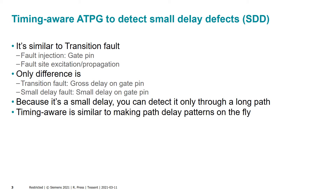Timing-aware is similar to transition fault — both have a fault site at each gate pin, slow to rise and slow to fall. The big difference is that transition fault considers a gross delay on the pin, so any path tested through that pin is valid to catch a gross delay. Timing-aware is looking for a small delay, so we find the longest path around that pin for excitation and propagation to the capture point. In a way, timing-aware is similar to path delay, but we're generating patterns to catch that fault on the longest path on the fly. ATPG does this — you don't have to know the paths ahead of time; ATPG figures it out as it's running.